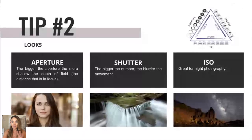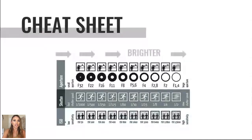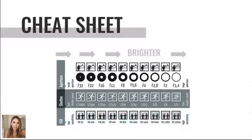ISO is great for night photography, but at quality's expense. If you're going to use ISO, the lighting needs to be perfect so your picture comes out great. There's a cheat sheet you can find anywhere — it's the best resource you can have. I carry it around and have a screenshot on my phone. For example, if I want a blurry background, I look at the cheat sheet: f/1.4 is a large aperture that gives blur in the back.